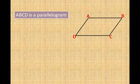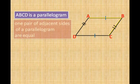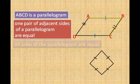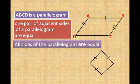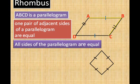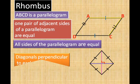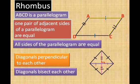We have parallelogram ABCD. We know that in a parallelogram the opposite sides are equal. If one pair of adjacent sides of a parallelogram are also equal, then all four sides become equal. Such a parallelogram is called a rhombus. In a rhombus, the diagonals are perpendicular to each other, and the diagonals bisect each other as well.